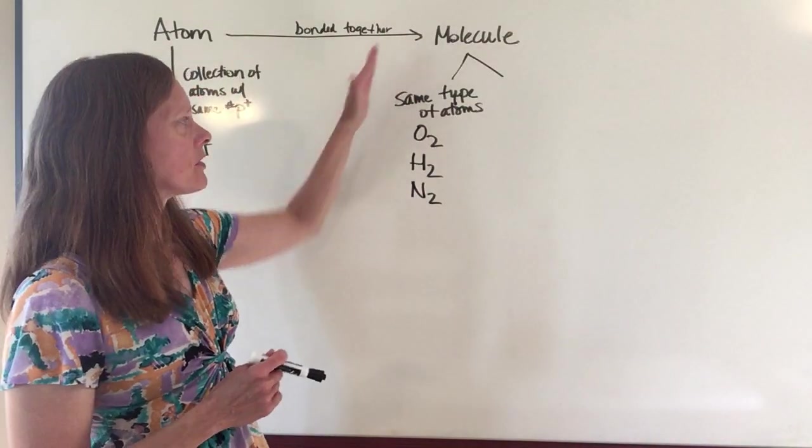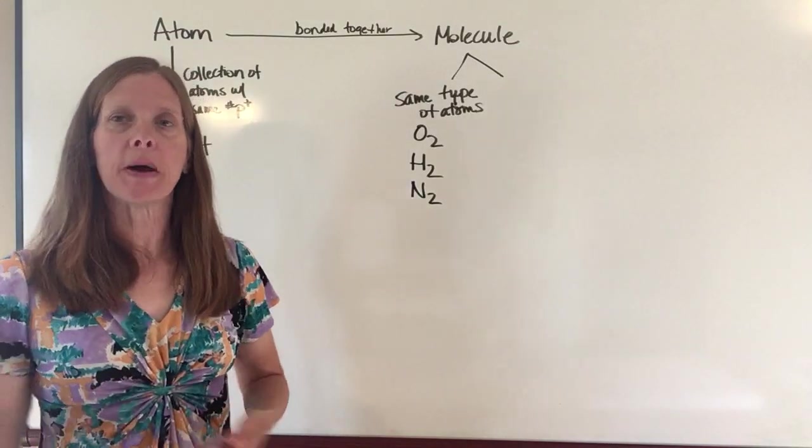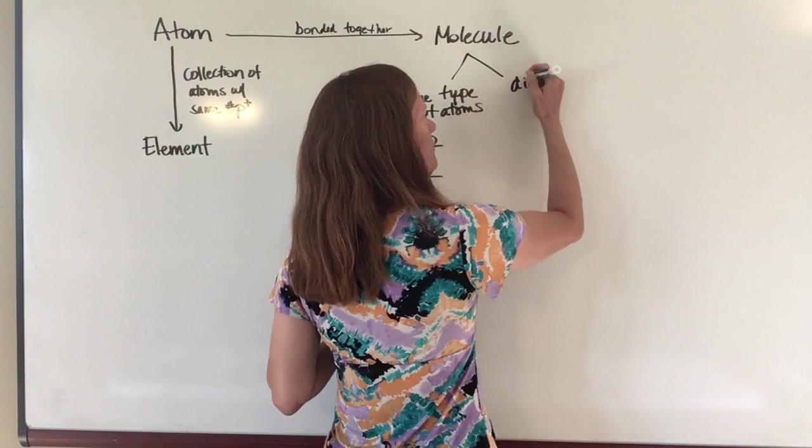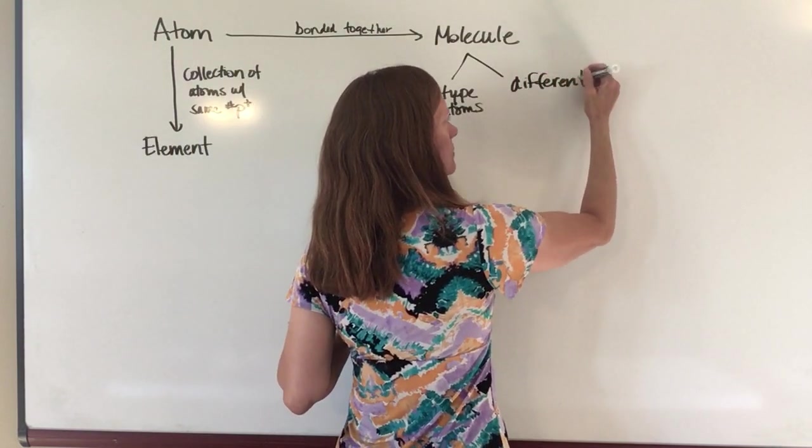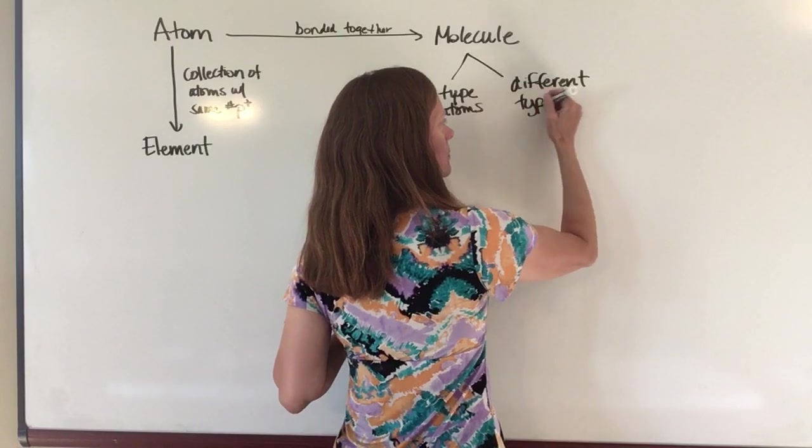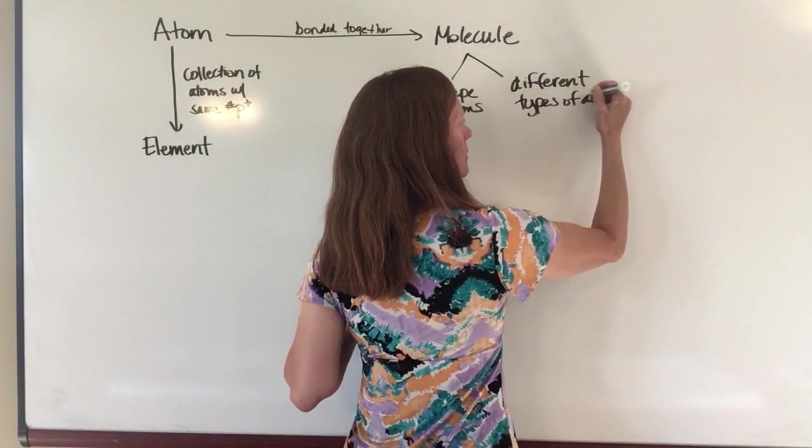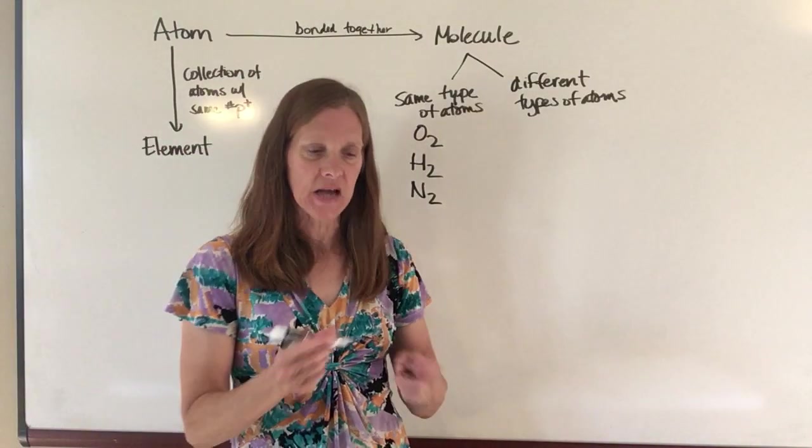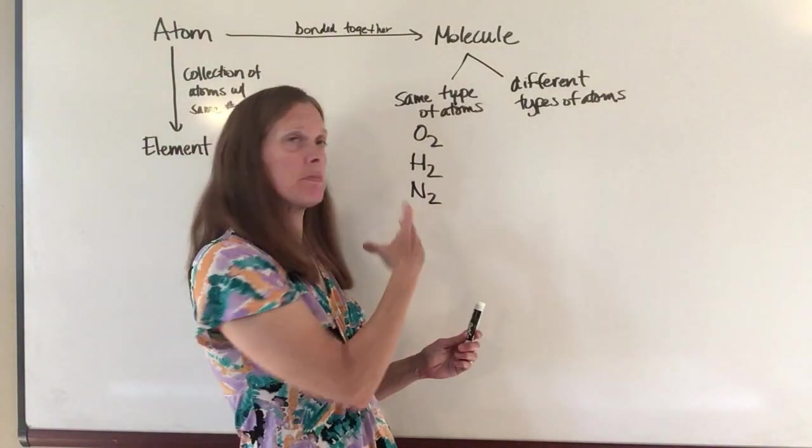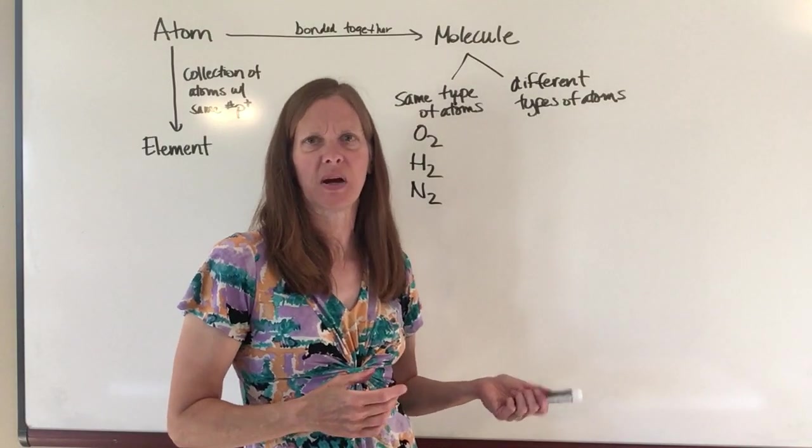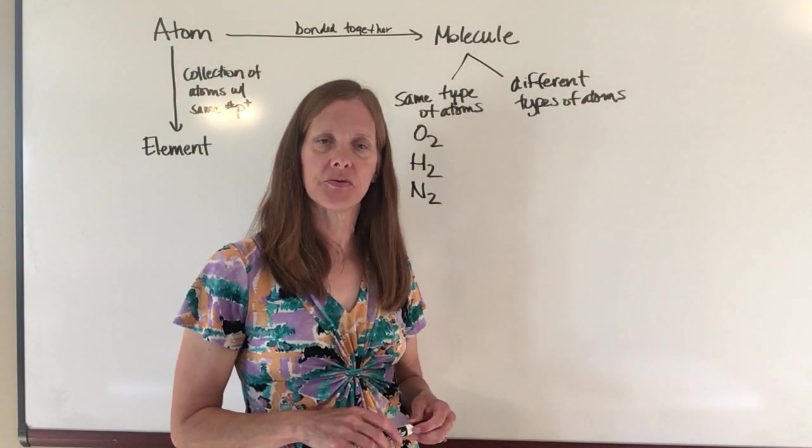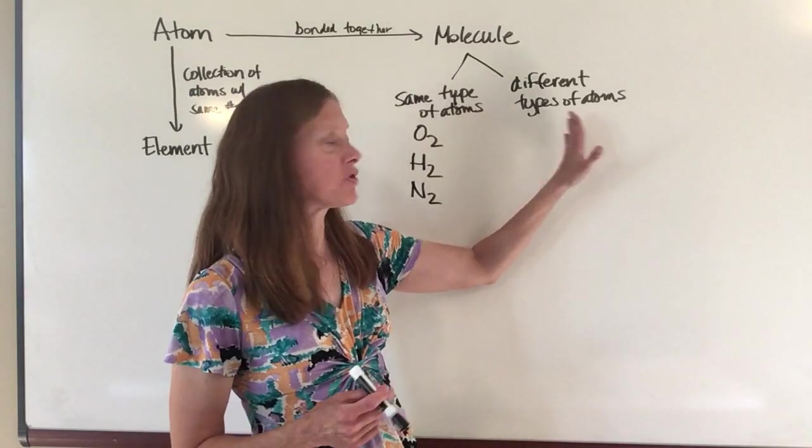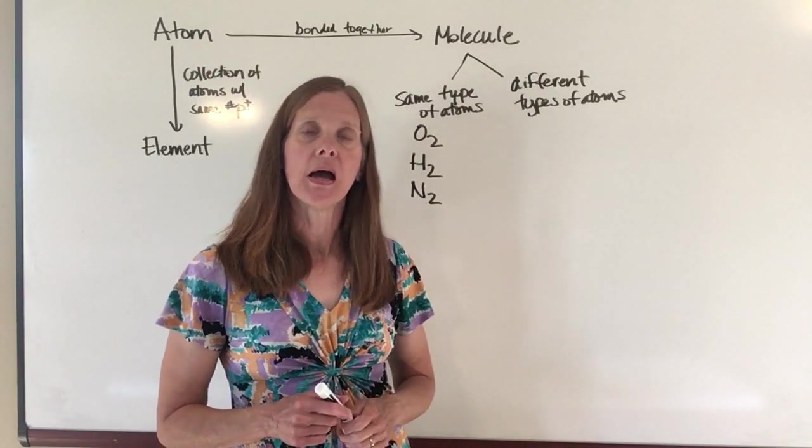So some molecules are made up of the same type of atoms, but many, many, many molecules are made up of different types of atoms. And that is how we can have so many different kinds of matter on earth. Because if we could only bond the same types of atoms together, we'd only have maybe 110 or so different types of matter. But we know that we have many, many more than that. And that's because different types of atoms can bond to each other.